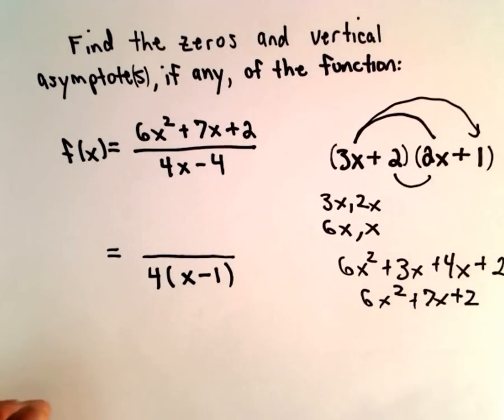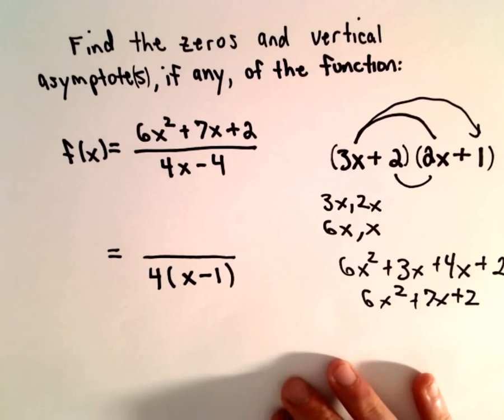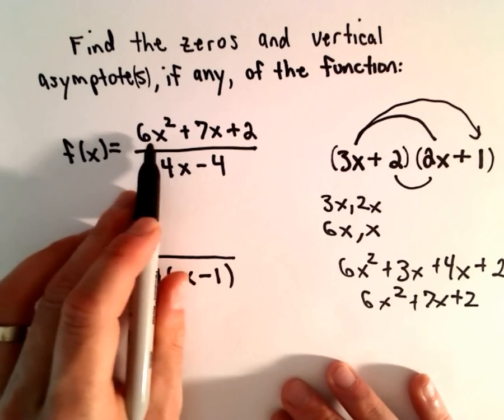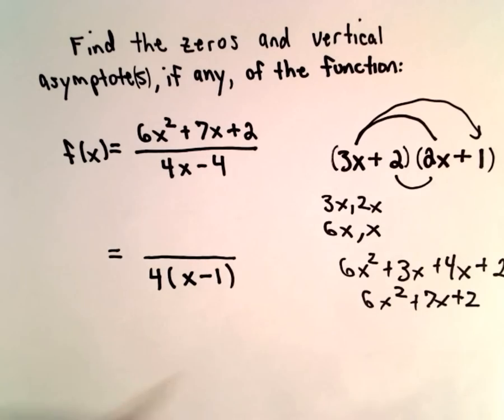All right, so that seems to be the correct factorization. Factoring quadratics, especially when the coefficient on the x² term is not a positive 1, can be a little laborious.